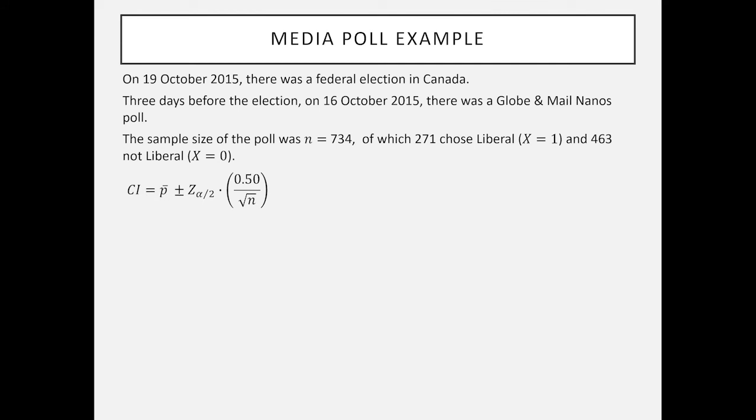Using the example we had a moment ago, this is the confidence interval I'm going to use. Clearly we don't know what the final proportion is going to be, that would be pi, until election day that night when everybody gets surveyed. This is three days before the election so all we know is the sample proportion. What is the sample proportion? We have 271 people who have chosen Liberal out of 734 possible and that gives us 271 divided by 734 equals 0.3692.